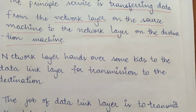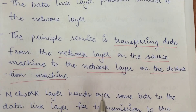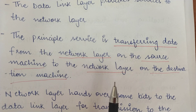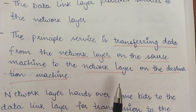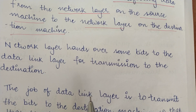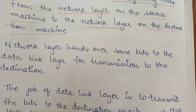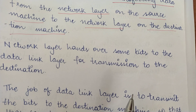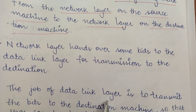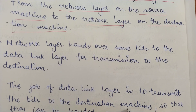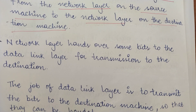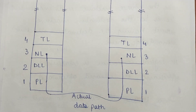Actually, the data is being transmitted at the bottommost layer — the physical layer — to the destination machine, and from there it moves up through the data link layer to the network layer. But we visualize it as the network layer on the source machine directly transferring to the network layer on the destination machine because it is easy to visualize it that way. Actually, the data is transmitted down to the physical layer on the source machine, handed to the physical layer on the destination machine, and from there goes up through the data link layer to the network layer and on to the application layer.